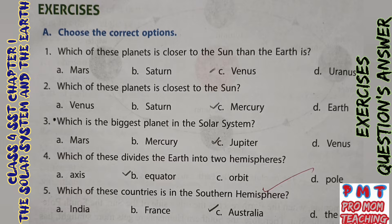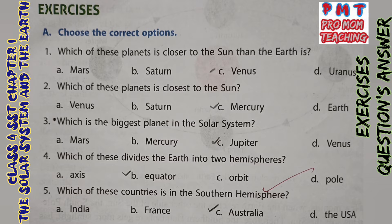Choose the correct options. Question 1: Which of these planets is closer to the Sun than the Earth is? Question 2: Which of these planets is closest to the Sun? Question 3: Which of these planets is the biggest planet in the Solar System? Question 4: Which of these planets divides the Earth into two hemispheres? Answer: Take B — Equator.